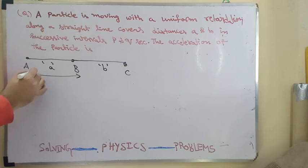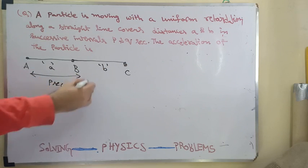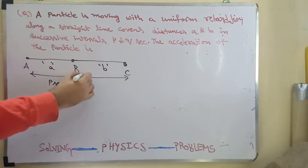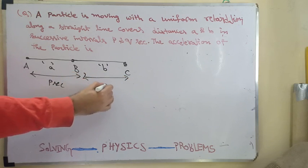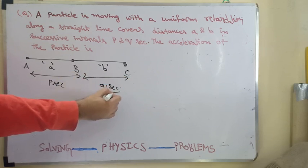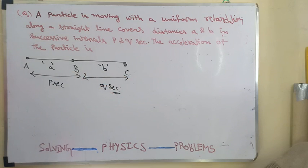And now, to cover the distance of AB, it took P seconds. And to cover the distance of BC, it took Q seconds. This is the information they have given. And they said that the particle is undergoing uniform retardation.